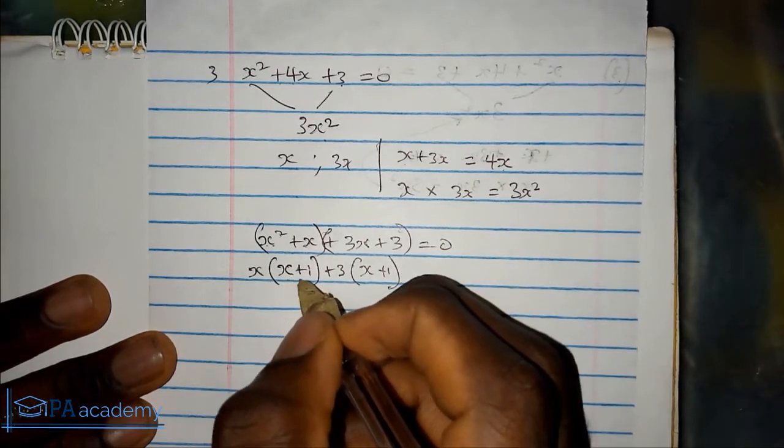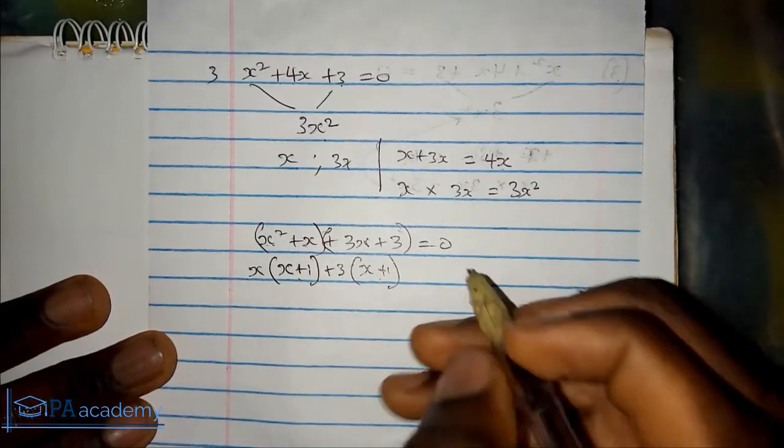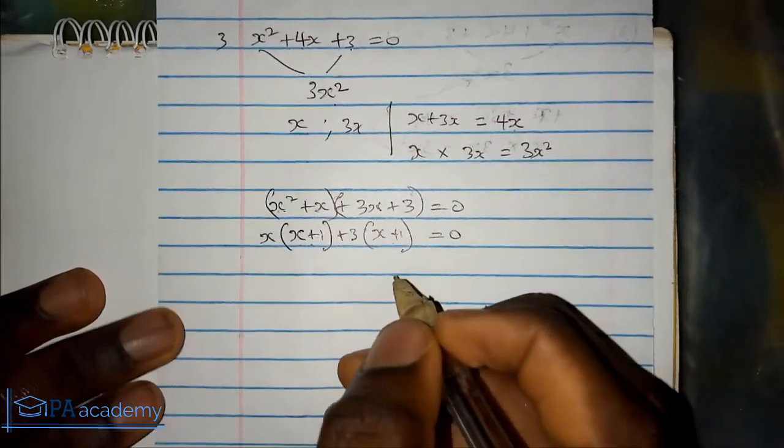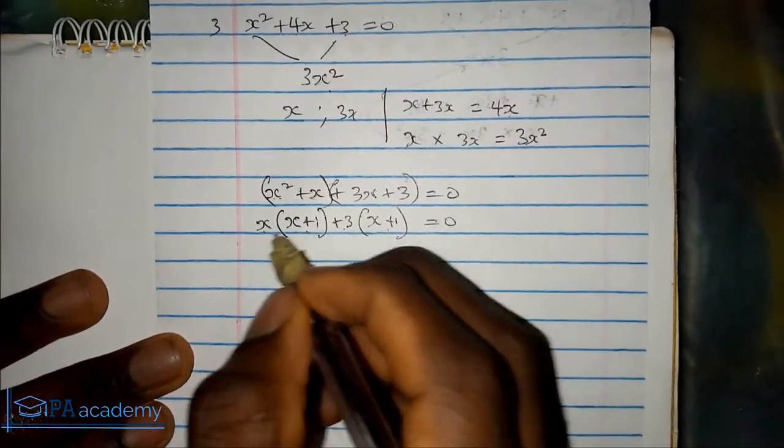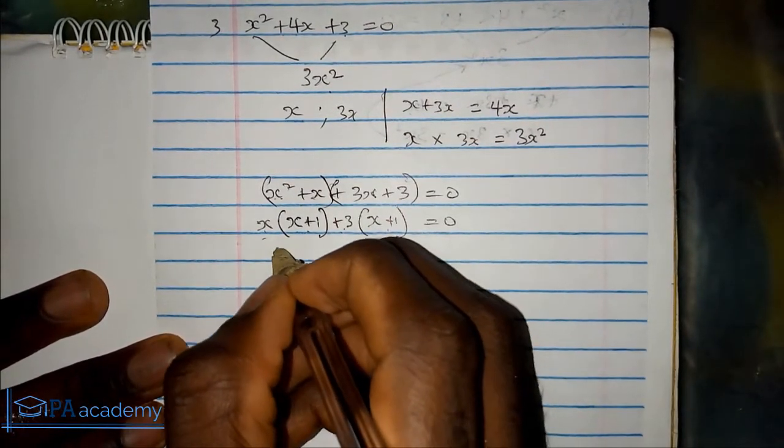Now that we have the same value, x plus 1, x plus 1 in the bracket, that tells us we are correct. We bring these two together, x plus 3, then pick one of the x plus 1 equals 0.